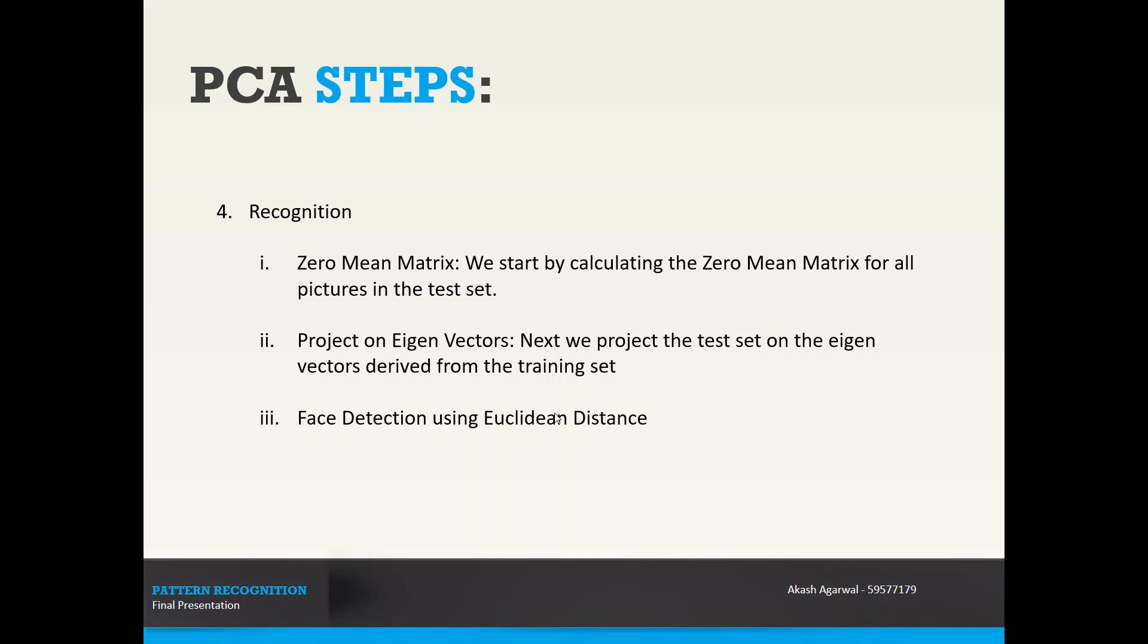Next we come to the recognition step. In the recognition step, we start by calculating the zero mean matrix of all the input images. Then we project the test set on the eigenvectors derived from the training set, so all these images are projected on the eigenvector that we obtain from the principal component analysis step. And then we calculate face detection using Euclidean distance. The Euclidean distance of the projected images to that of the training images is calculated, and we select the image which is closest to the training set.